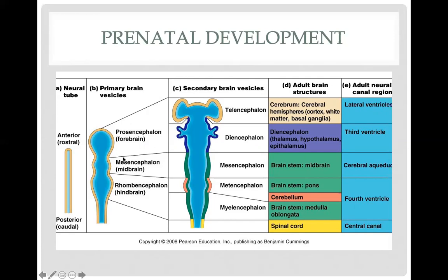The prosencephalon, identified as the forebrain, develops into the telencephalon and diencephalon. These two structures will eventually form your cerebrum — the largest part of your brain — which includes the cerebral hemisphere, the cortex, white matter, and the basal ganglia. The diencephalon is made up of your thalamus, hypothalamus, and epithalamus.